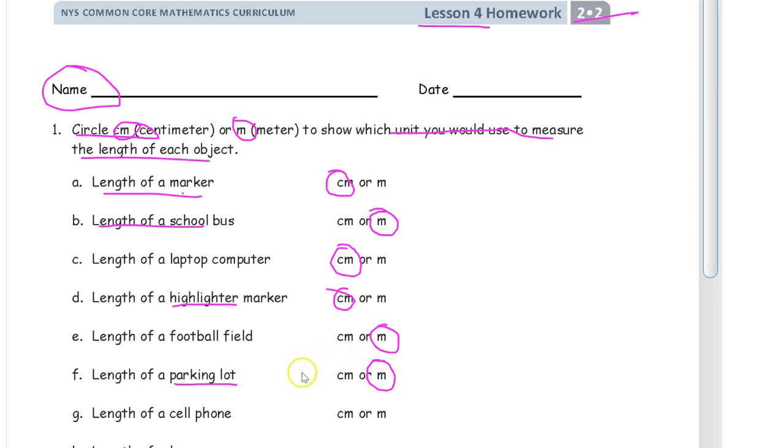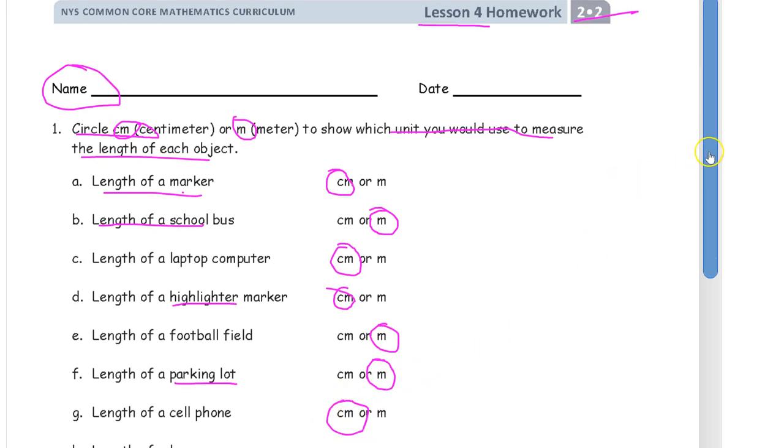Again, anything that's very much bigger than the length of a ruler is going to be meters. Length of a cell phone. That's going to be shorter than a ruler, so centimeters. And let me scroll down here.